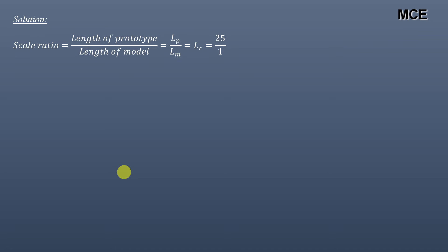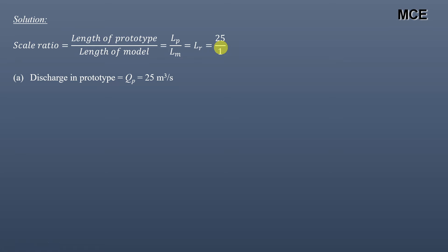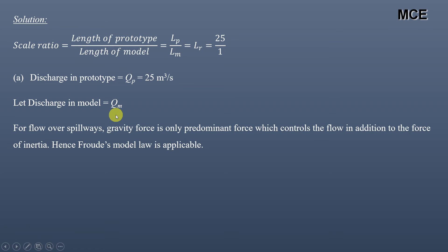First, we have been given that the scale ratio of the prototype to the model is 25, meaning the prototype is 25 times larger than the model. The scale ratio, denoted by Lp/Lm or Lr, is 25 to 1. The discharge in the prototype, denoted by Qp, equals 25 cubic meters per second. Let us assume that the discharge in the model is Qm. For flow over spillways, gravity force is the only predominant force, so Froude's model law is applicable.